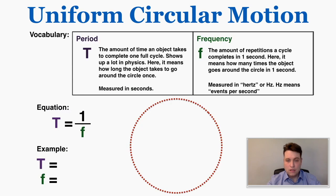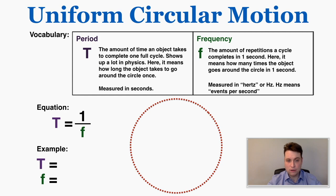Two more vocabulary words needed to describe circular motion are period and frequency. Period is the amount of time an object takes to complete one full cycle. Just like class periods are cycles that repeat over time, a period in physics is the amount of time any cycle takes to repeat — in circular motion, it means how long the object takes to go around the circle once. It's measured in seconds and uses the symbol capital T.